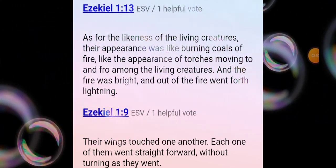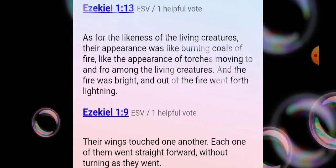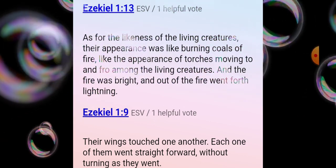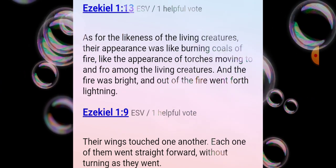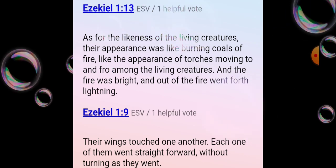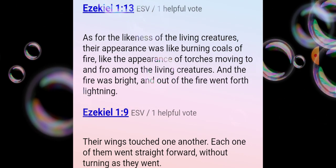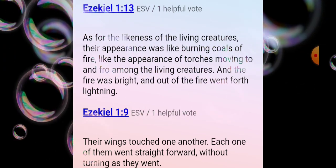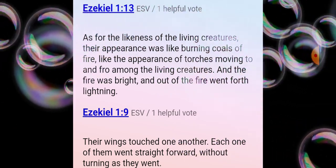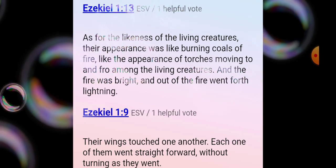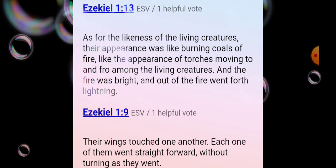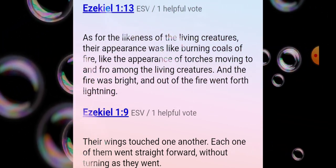Ezekiel 1:13 says their appearance was like burning coals of fire, like torches moving to and fro in a constant circular motion among the living creatures. The fire was bright and out of the fire went forth lightning. They could perform maneuvers that defy our natural laws because they're angelic beings, immortal, with power given them from Elohim at the direction of Yusha HaMashiach.